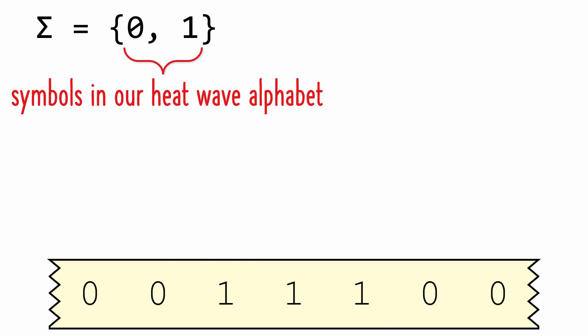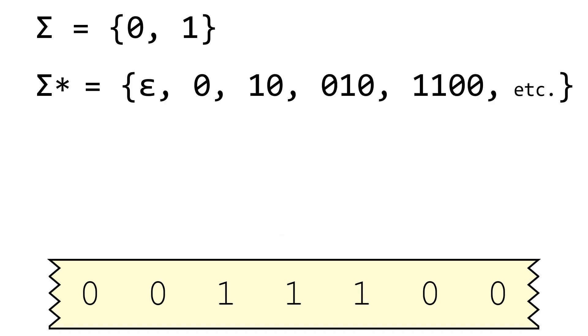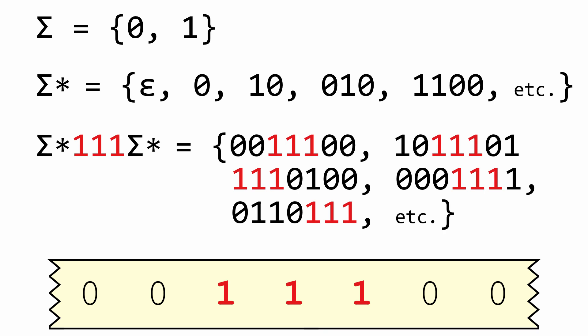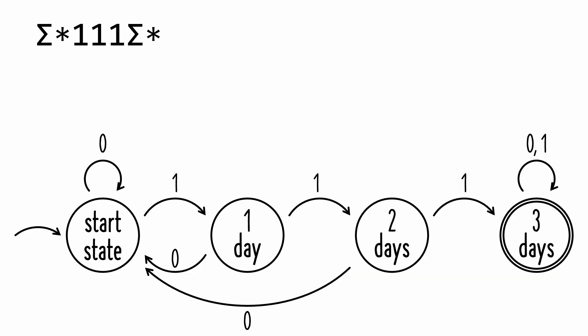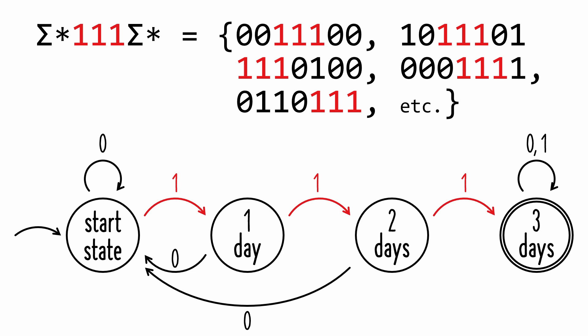Let's look at the mathematical notation for regular expressions before they were implemented in software. Sigma represents the set of symbols in our input alphabet. A string is a sequence of symbols from sigma. Sigma star is the set of all possible strings over our alphabet, including the empty string, so sigma star could have zero elements. Using this notation, sigma star 1 1 1 sigma star represents all strings that contain the substring 1 1 1. This regular expression is a compact form of our heat wave state diagram — every string the diagram recognizes as a heat wave, the regular expression recognizes too. And even though they're equivalent, regular expressions are more easily programmable.